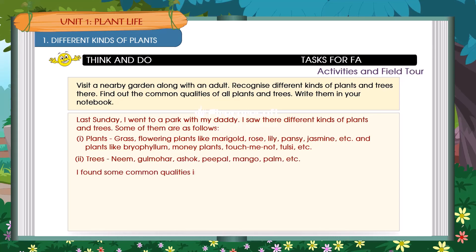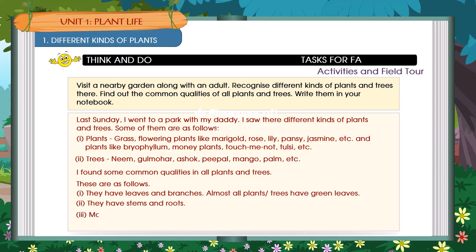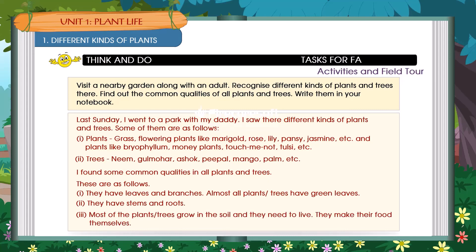I found some common qualities in all plants and trees. These are as follows: They have leaves and branches. Almost all plants and trees have green leaves. They have stems and roots. Most of the plants and trees grow in the soil and they need food to live. They make their food themselves.